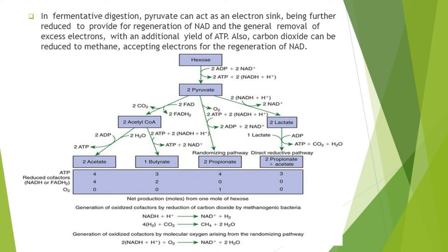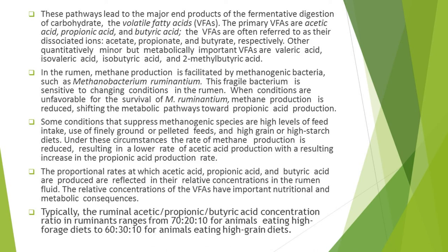NADH is also regenerated by the reduction of carbon dioxide to methane, and all these processes are described in the diagram shown. All these pathways eventually lead to the major end products of fermentative digestion of carbohydrates: the volatile fatty acids. The primary volatile fatty acids are acetic acid, propionic acid and butyric acid, referred to as their dissociated ions acetate, propionate and butyrate respectively. Other quantitatively minor but metabolically important volatile fatty acids include valeric acid, isovaleric acid, isobutyric acid and 2-methylbutyric acid.